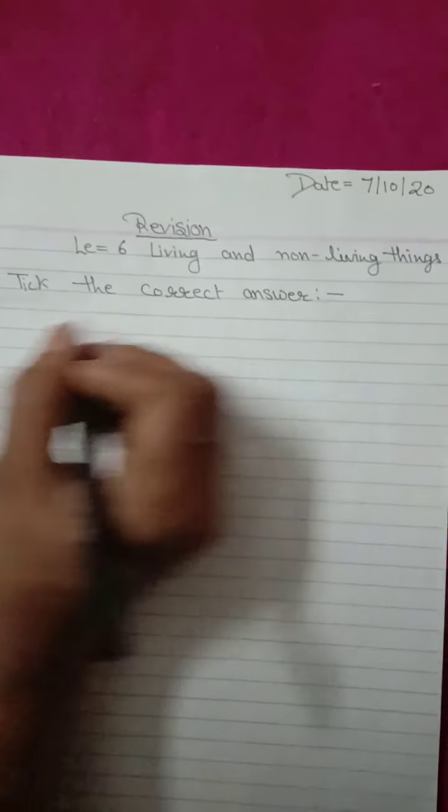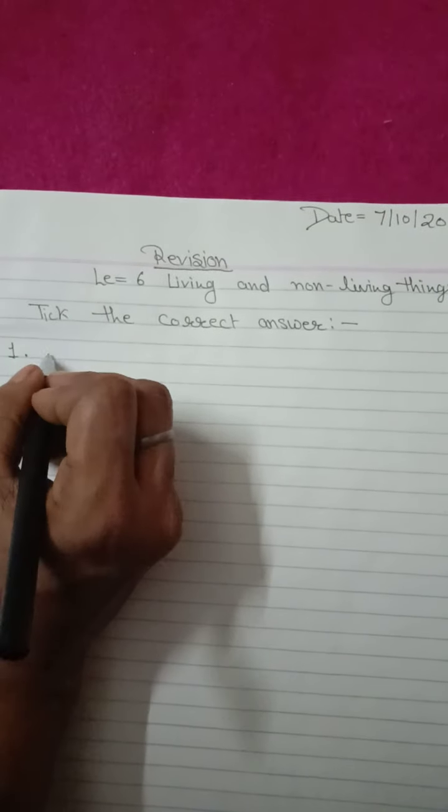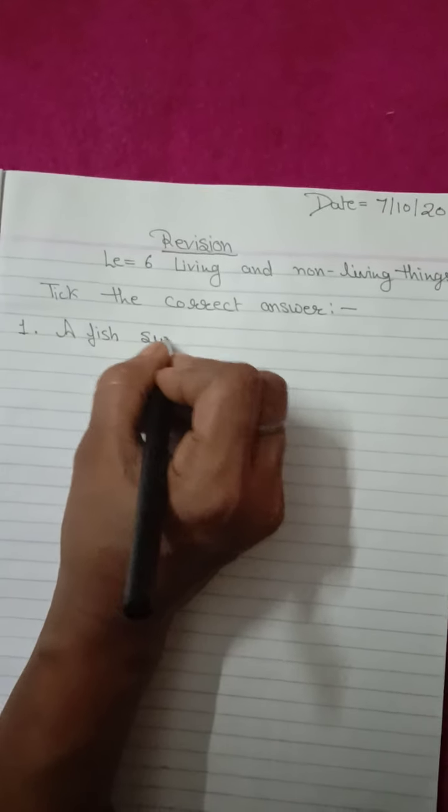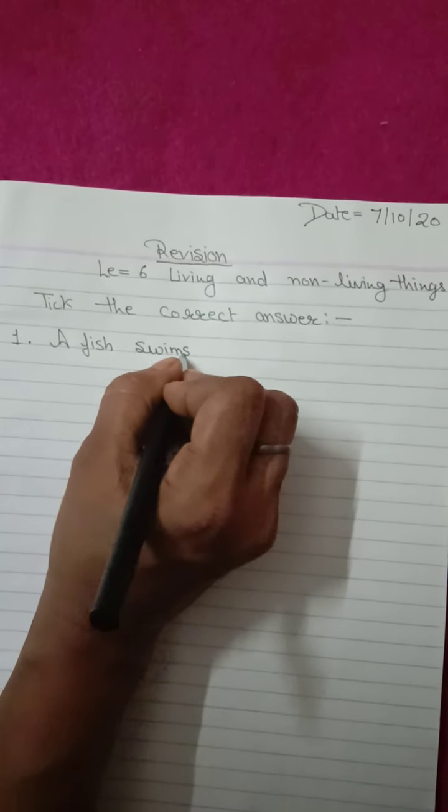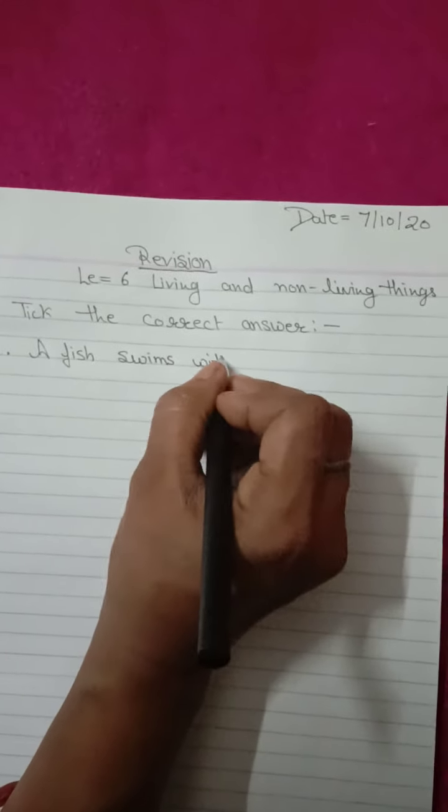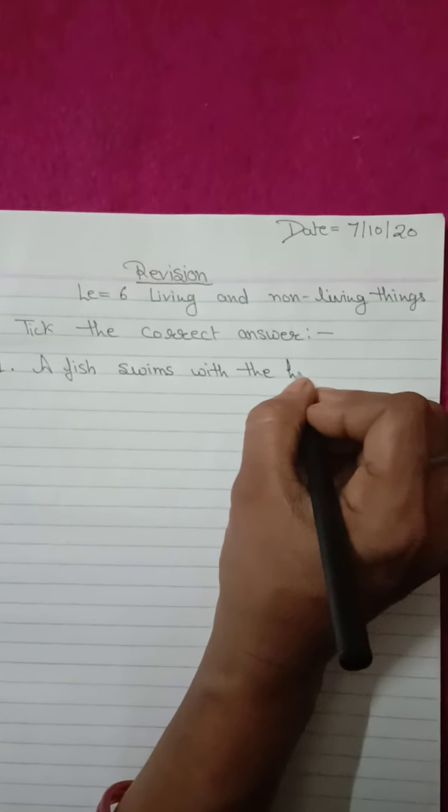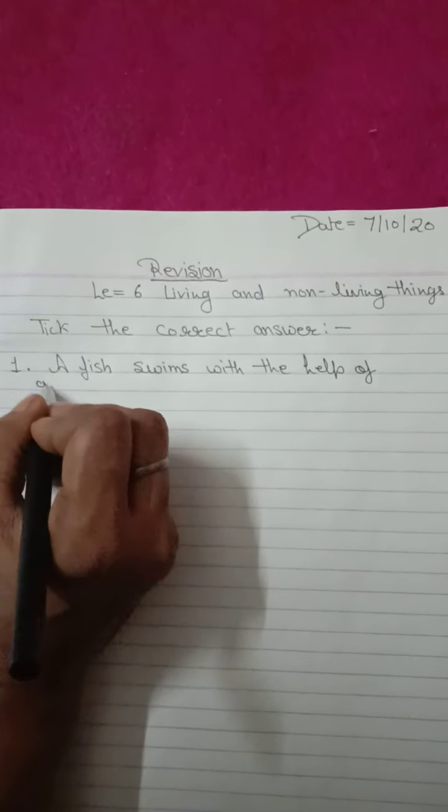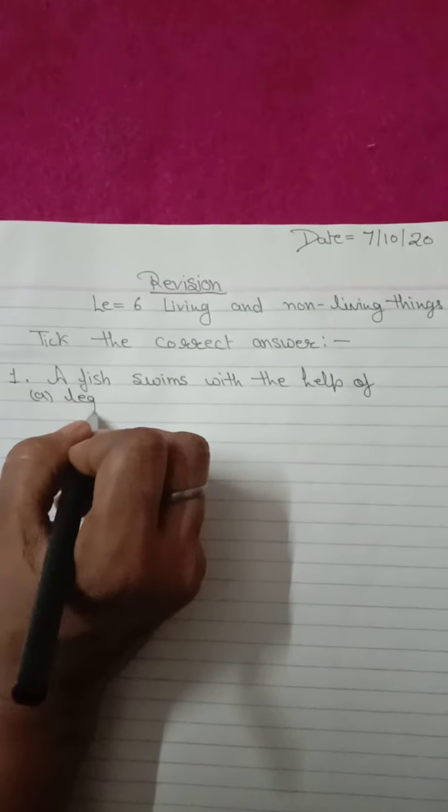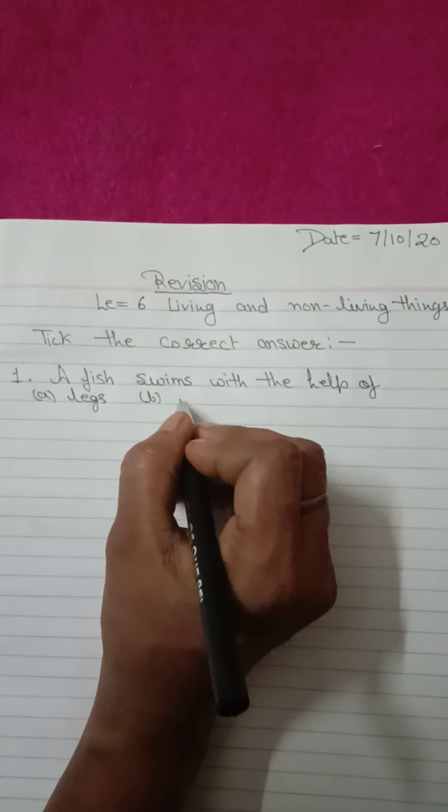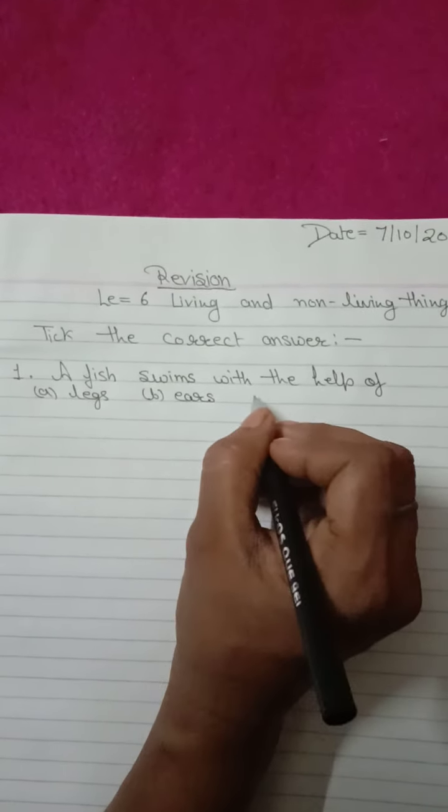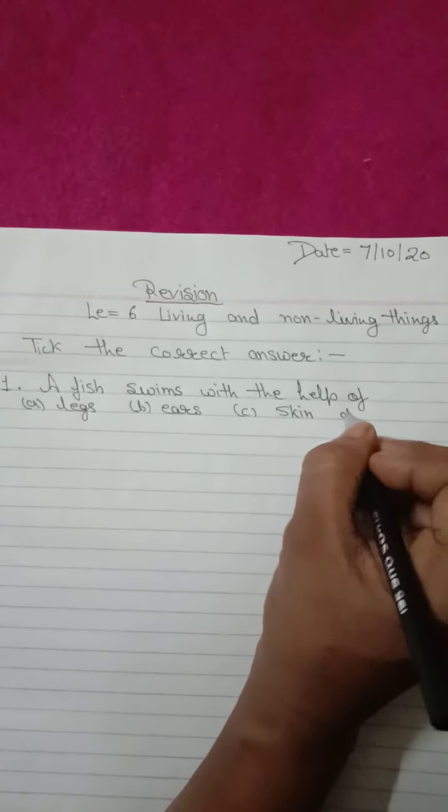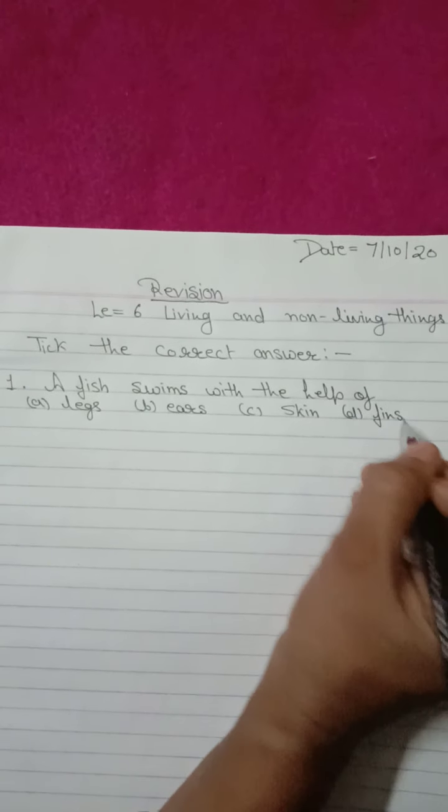First, a fish swims with the help of. Your options: option A, leg, option B, ear, C, skin and D, fins.